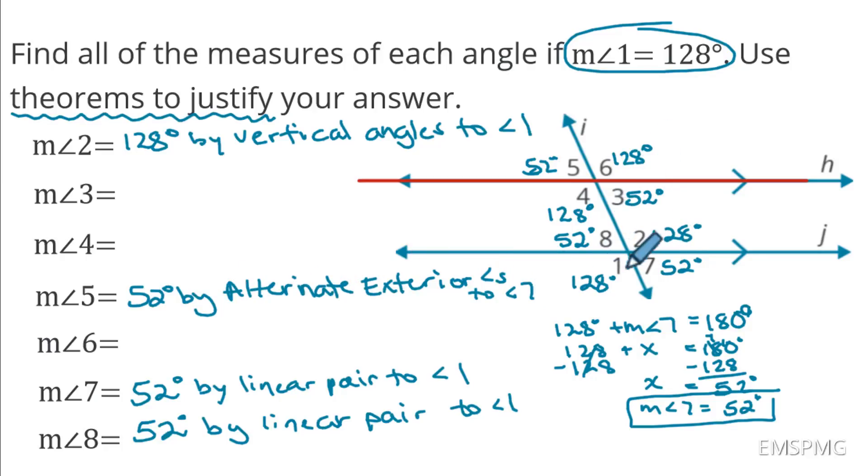If I look at angle 6 and angle 1, same thing. This is 128 degrees. And again, this is by the alternate exterior angles theorem. Again, make sure you are listing who it is alternate exterior to. This is exterior to angle 1.